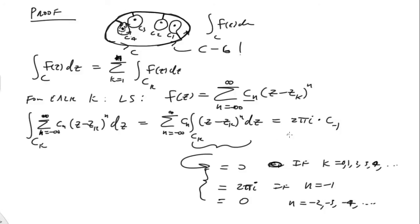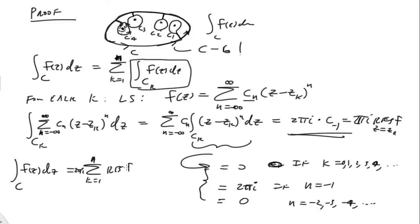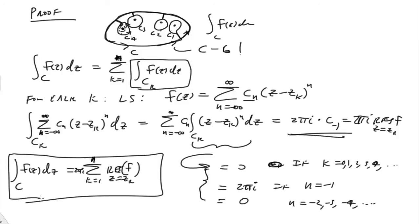If that's true for every one of these individual contours, the proof is pretty straightforward — we're pretty much done. We just add up the sum. All of those yield individual values for every k, so the answer is 2πi times the sum from k equals 1 to n of the residue of f at z equals z_k. That's what we call the residue theorem. This is a very constructive way to compute contour integrals in the plane.